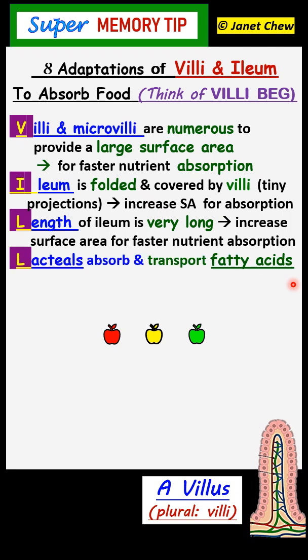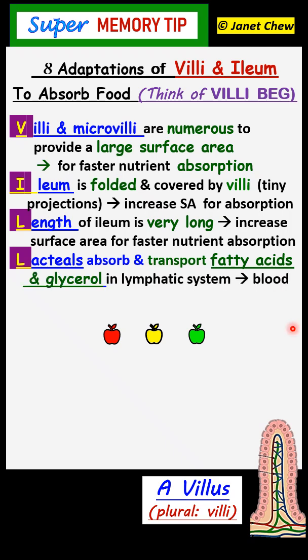Next, we have the next L which stands for lacteose. Lacteose are lymphatic capillaries that absorb and transport the fat-soluble substances like fatty acids and glycerol and vitamins A, D, E and K into the lymphatic system to the blood circulatory system.